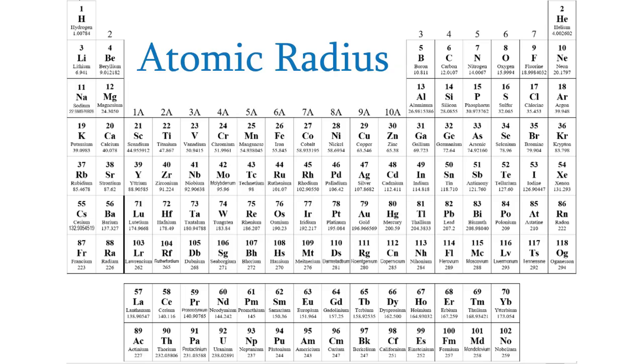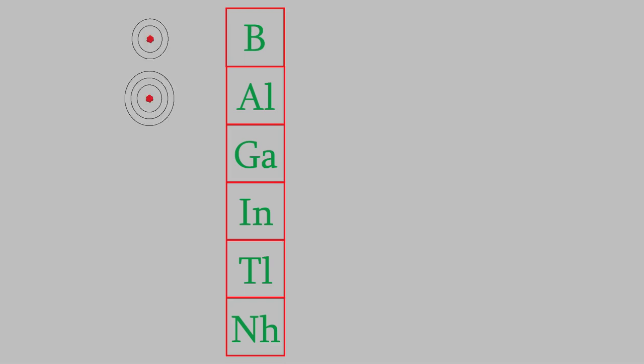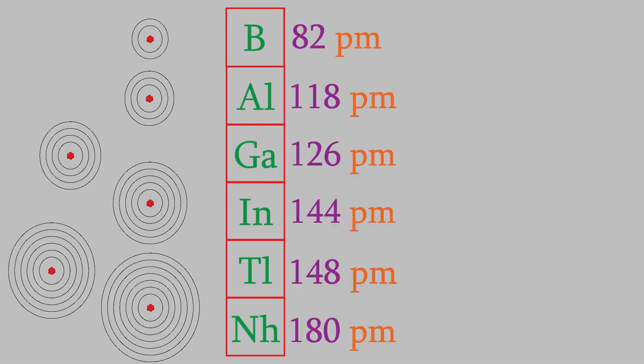As you might expect, the radius of an atom increases as we go down a column of the periodic table. This is because, as we go down, the value of n increases, which means the number of electron shells increases. So, for example, if we look at the atoms in this column, the value of n increases from n equals 2 up to n equals 7, and the atomic radius also increases from 82 picometers up to 180 picometers.